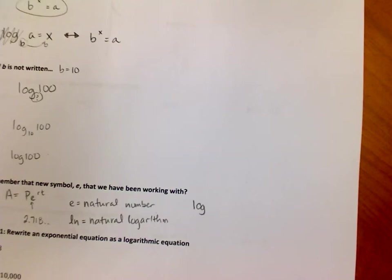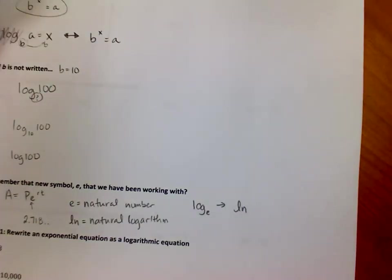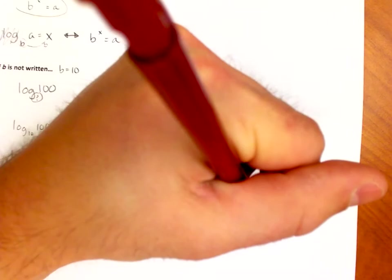Basically what it is, is if I ever had a log and the base of it was e, e to what power gives me something, we can replace that with just a simple ln and you don't have to write a subscript because if you ever write ln it's assumed that the base is e.